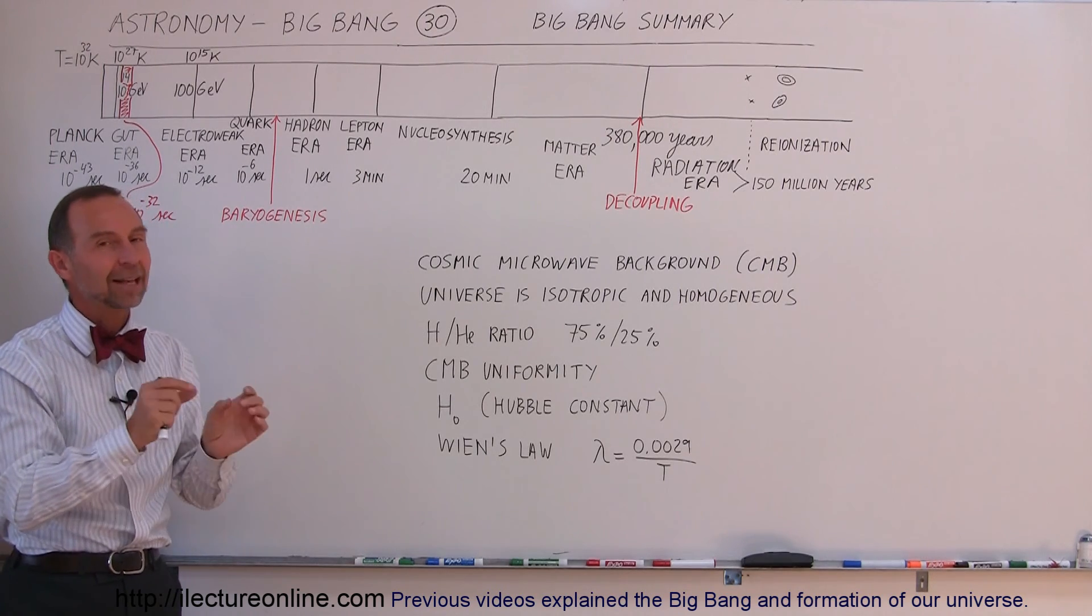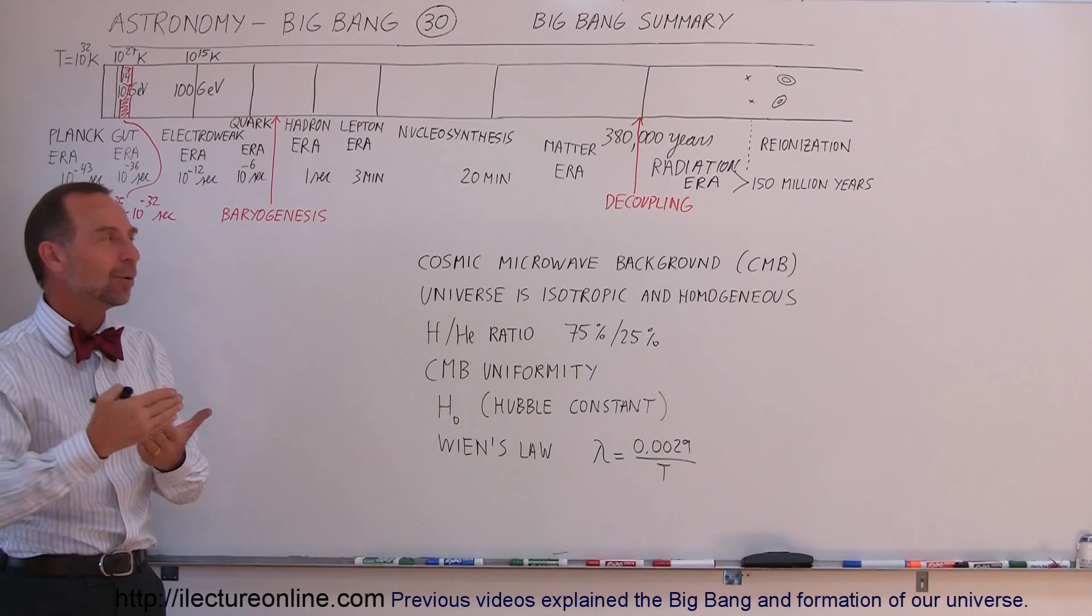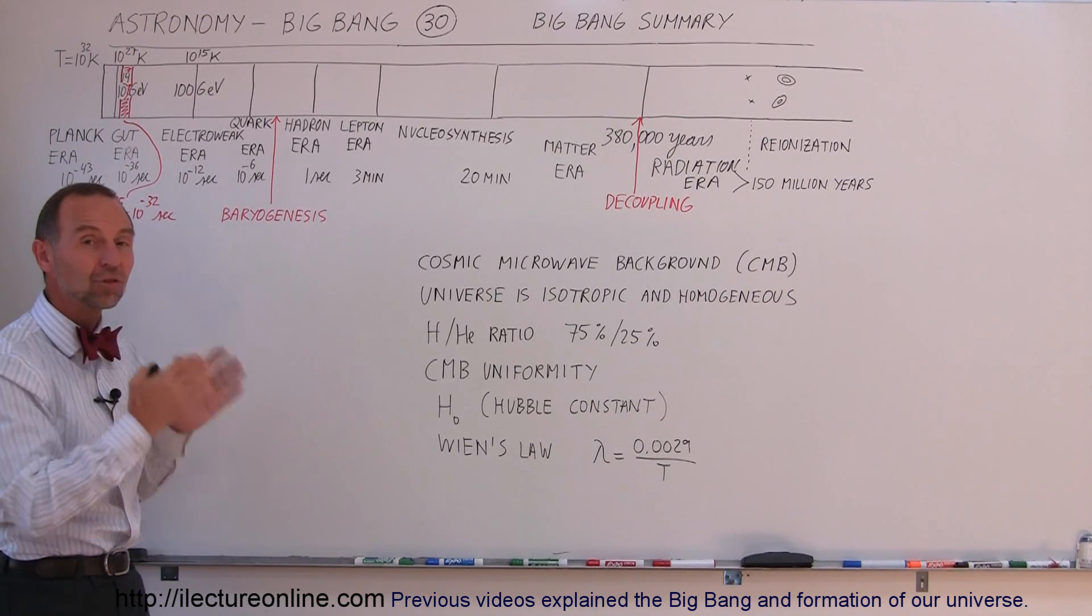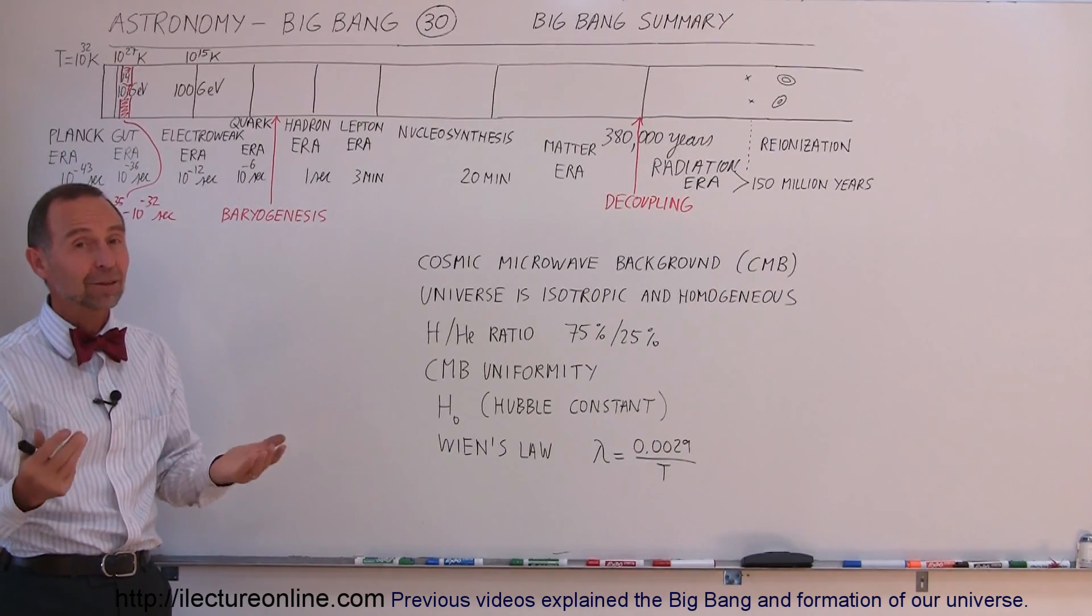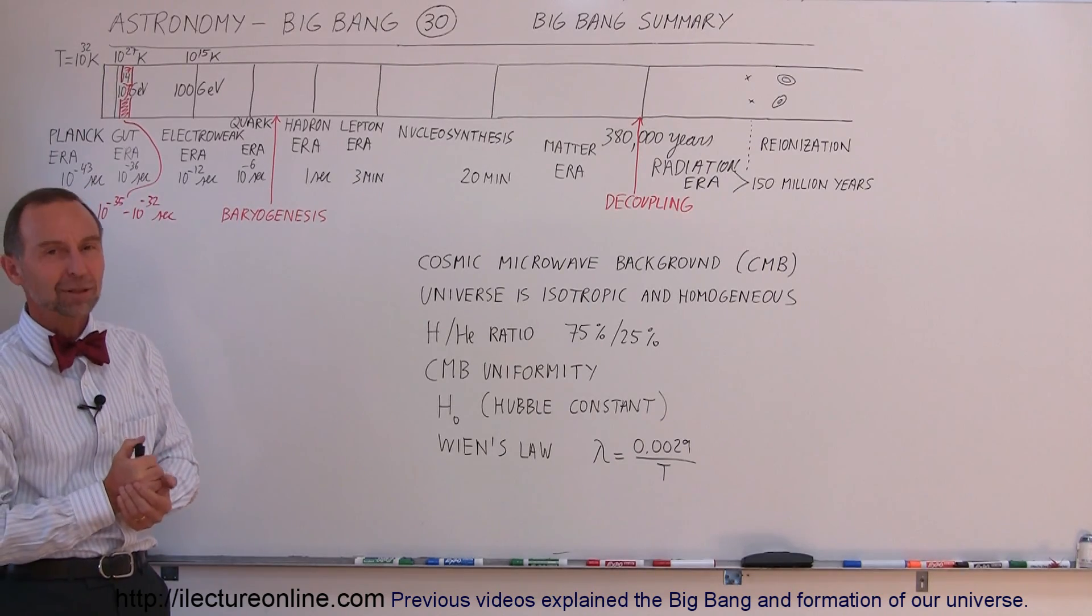We still have to fill in a lot of details, but as time goes by and we discover more and more, the theory becomes more and more solid, and we have a better and better understanding how the Universe got to be about 13.8 billion years ago.